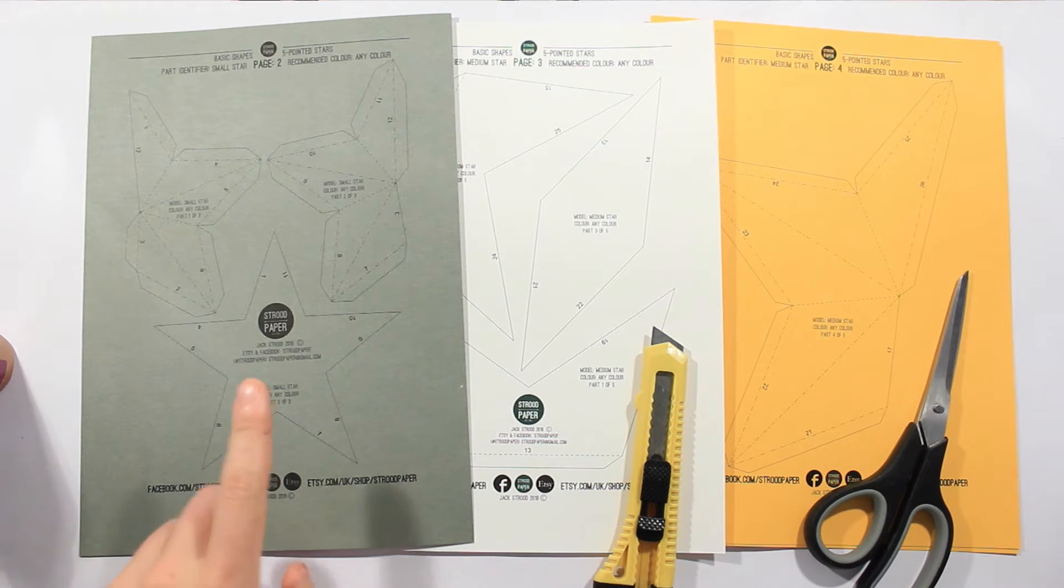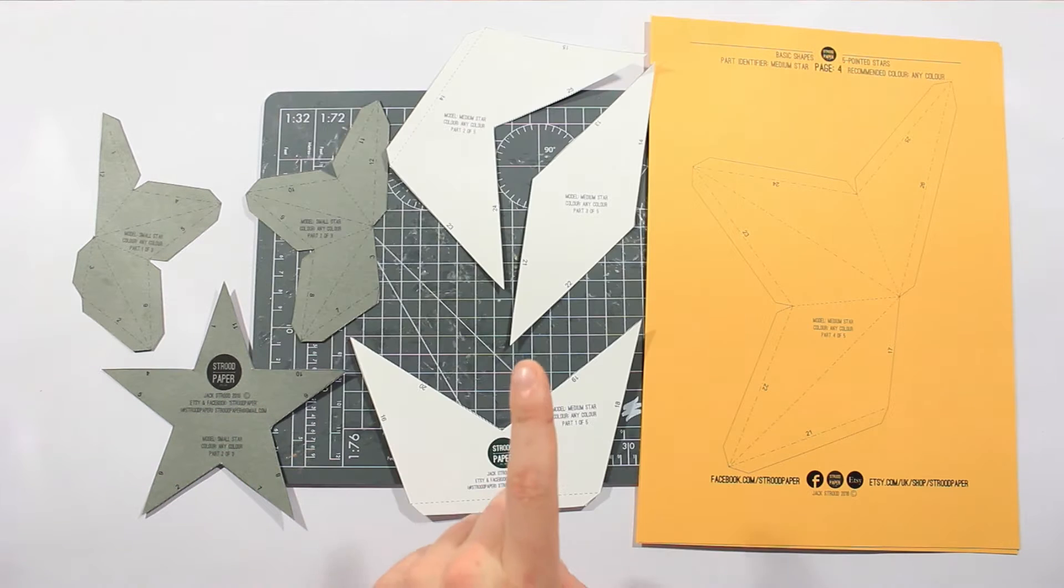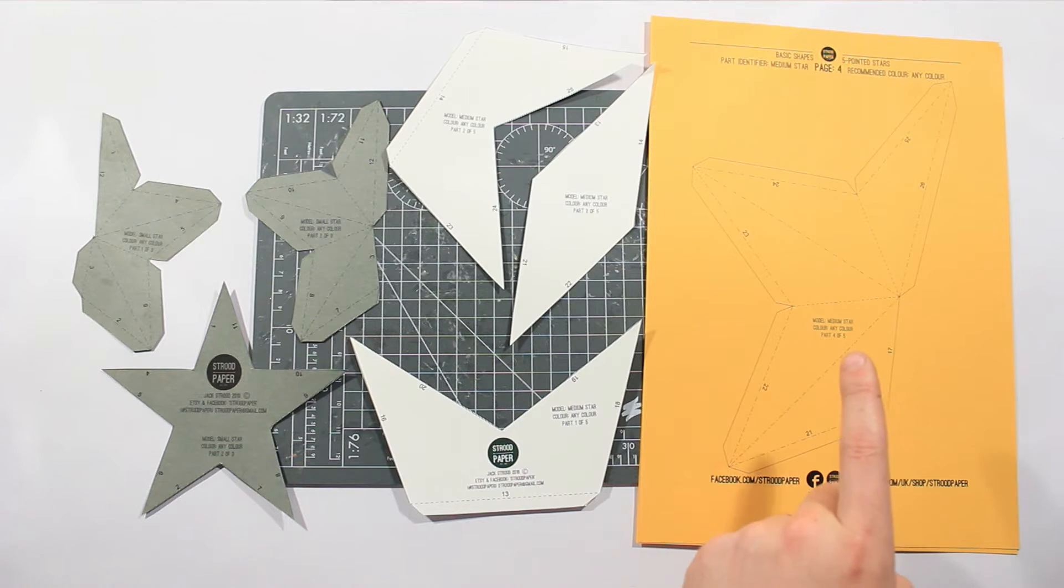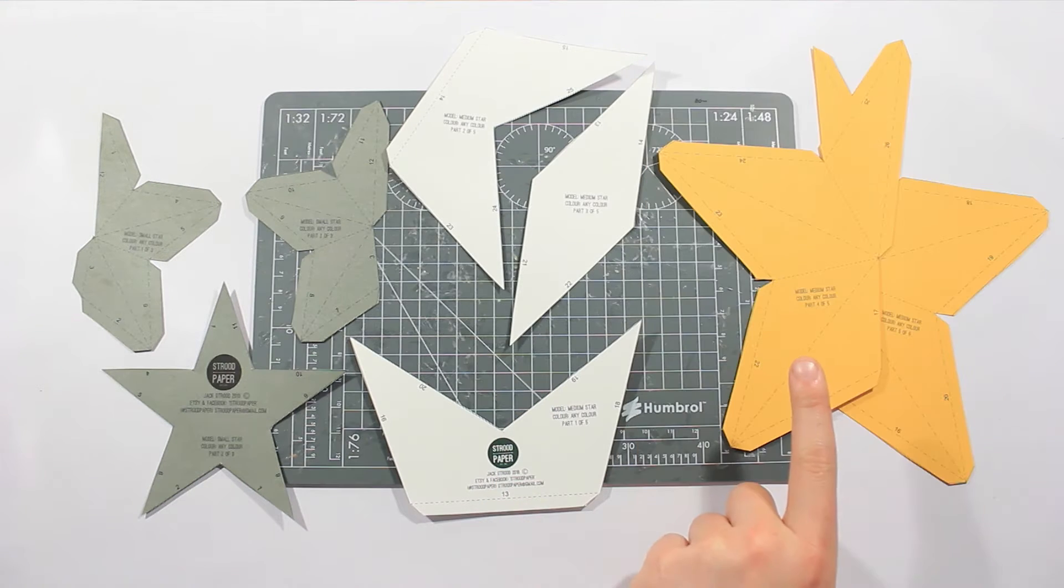So once cut out, this one looks like this, and this one cut out looks like this, and page four and page five looks like this, just like that.